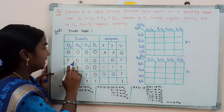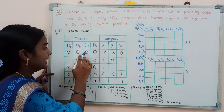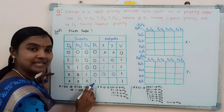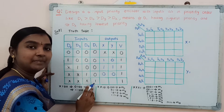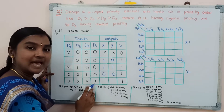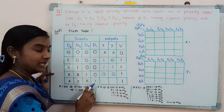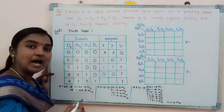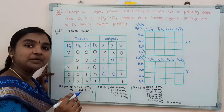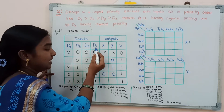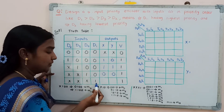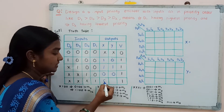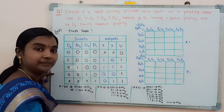For the last combination: d2 is don't care, d3 is don't care, d0 is don't care, and d1 is 1. As per the given priority order, d1 has the highest priority. Whether d2, d3, and d0 are 0 or 1, we give priority to d1. So the d1 binary code is 0, 1.